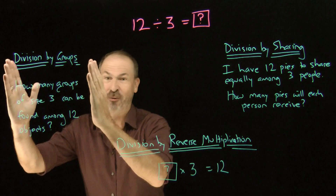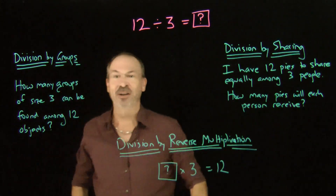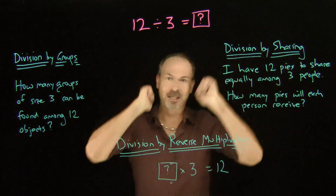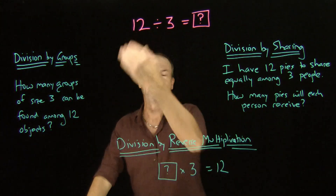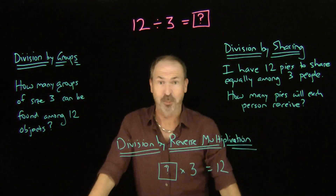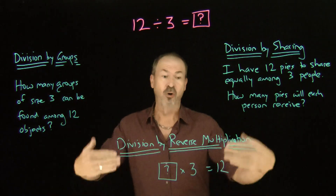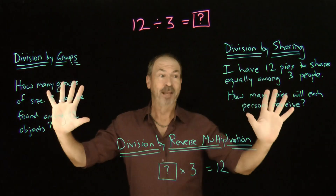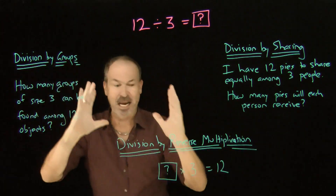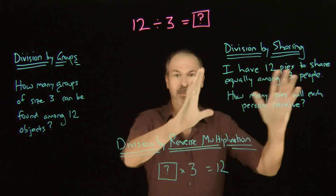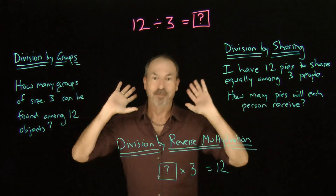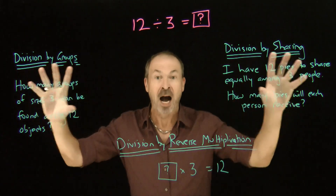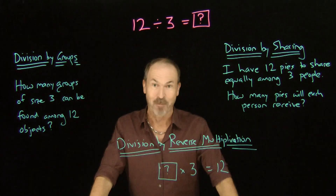I like to think of it as: division by groups — how many groups of a certain size can you find? Division by sharing — I want to share a quantity among a certain number of people, how many does each person get? Or just do multiplication backwards. I know the answer to each of these individual problems is 4, but philosophically, why should they all have the same answer of 4?